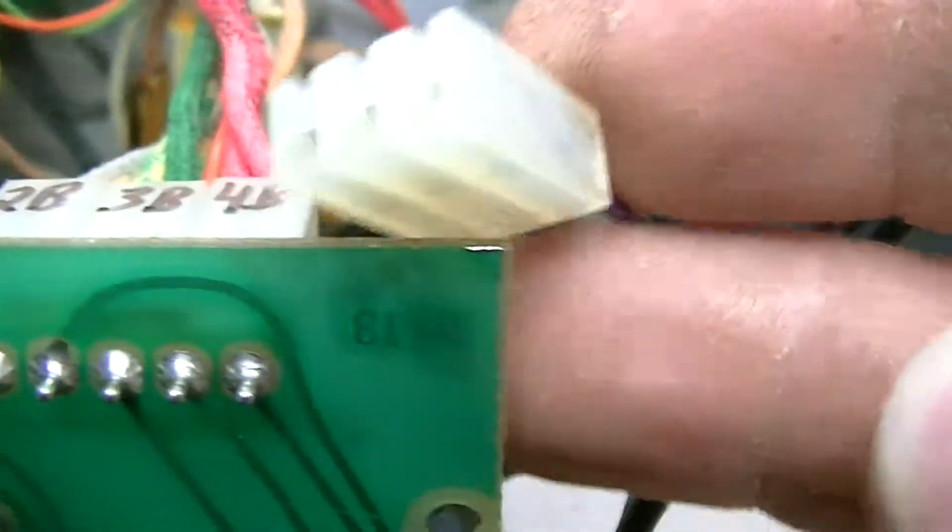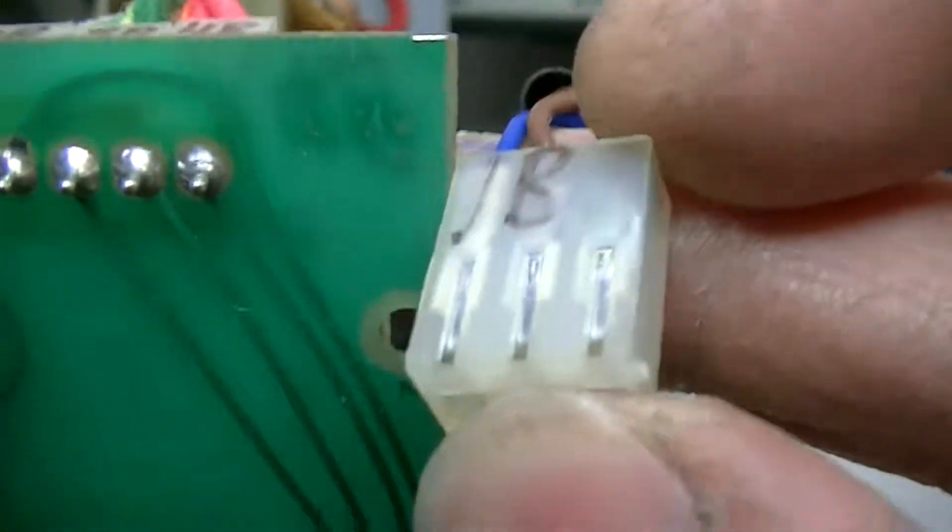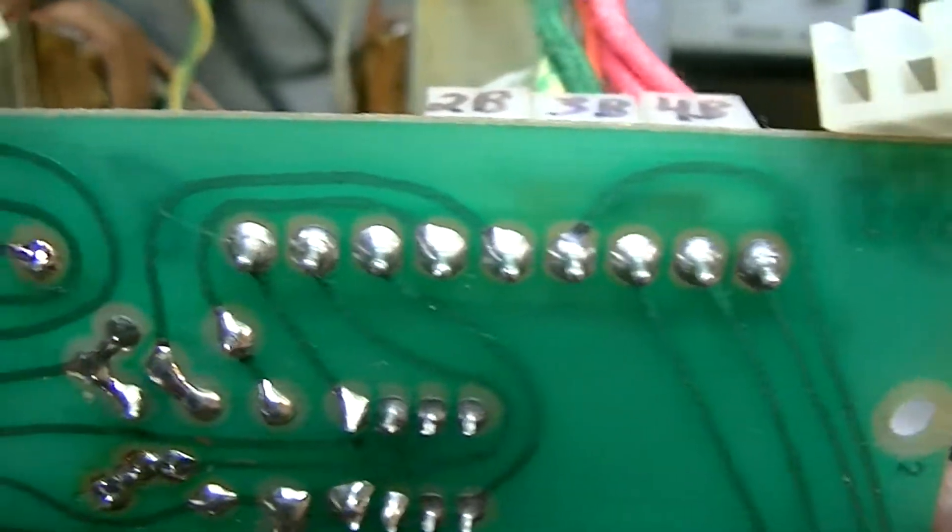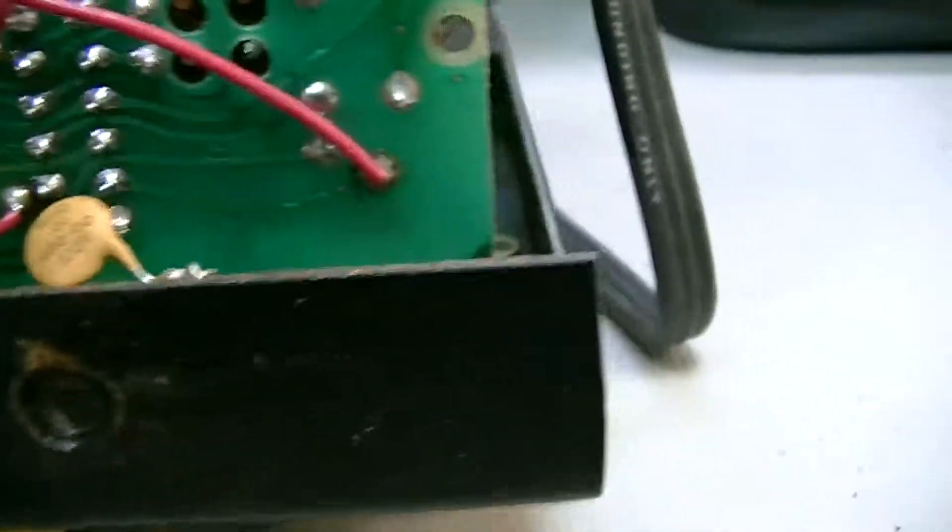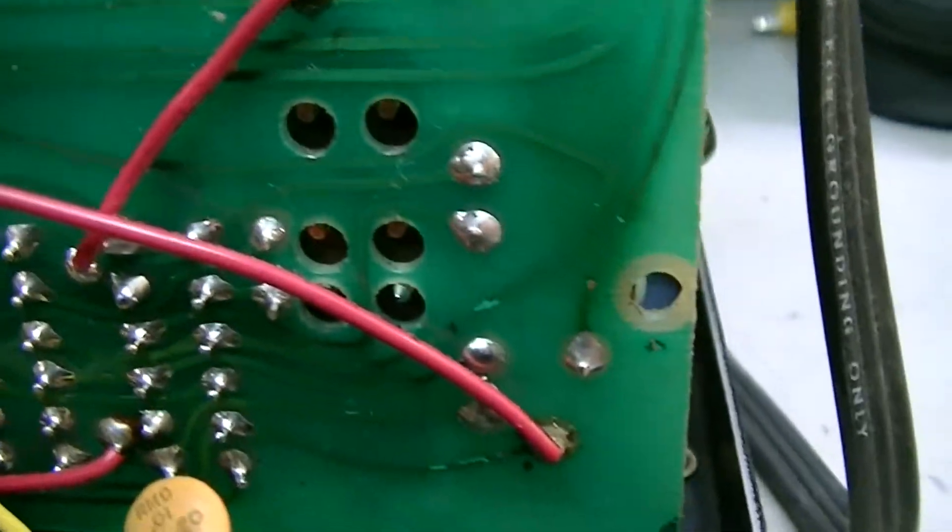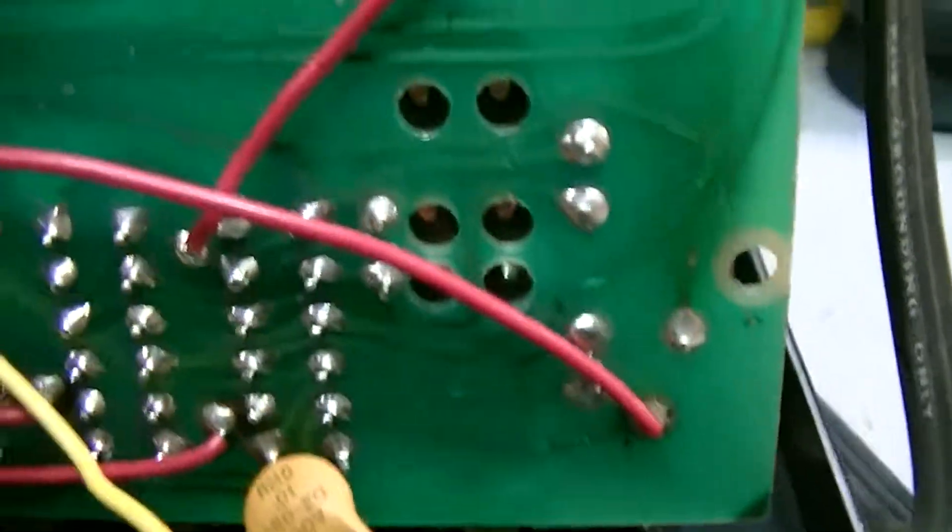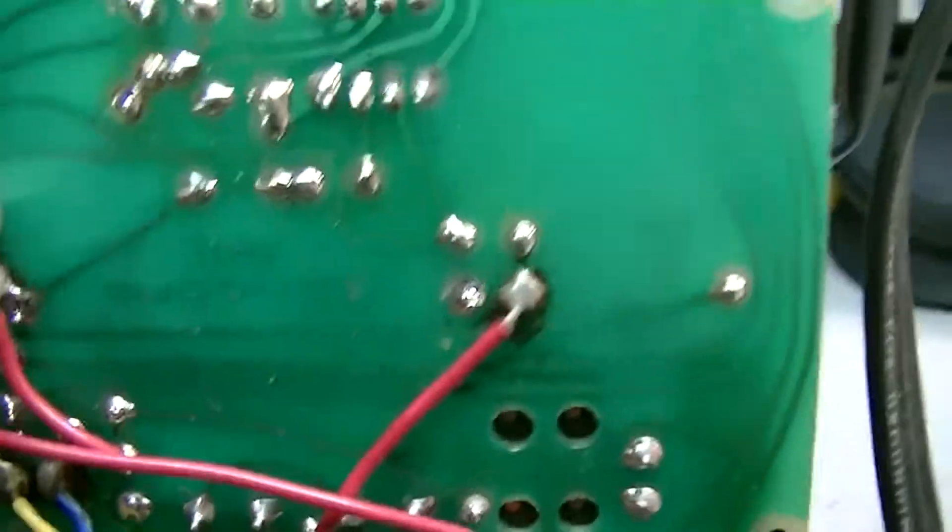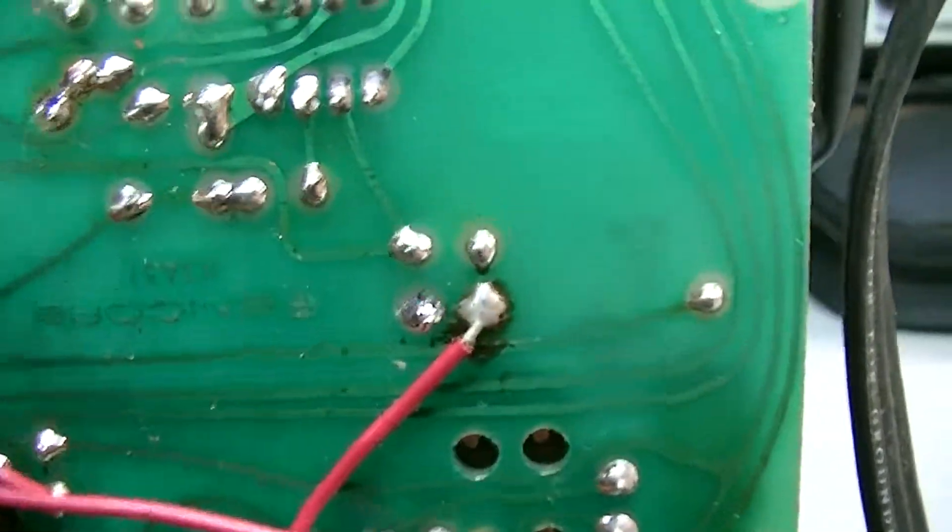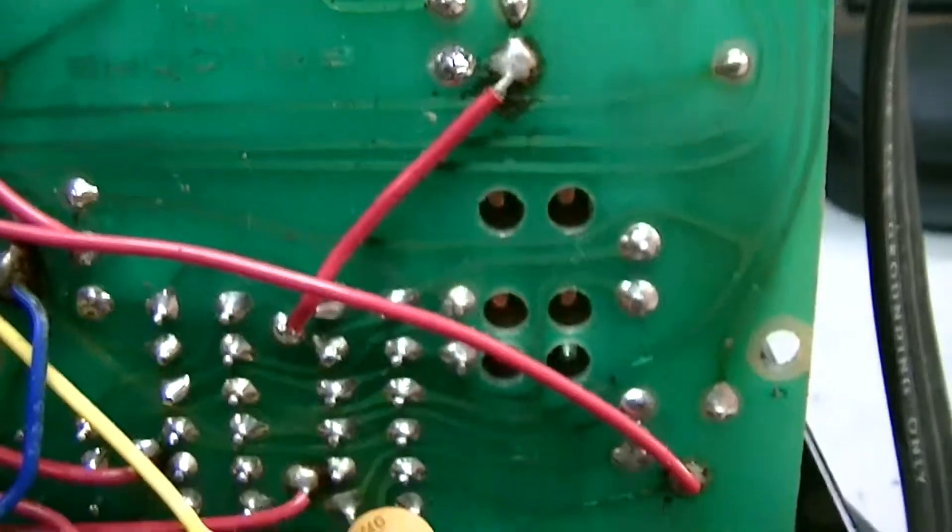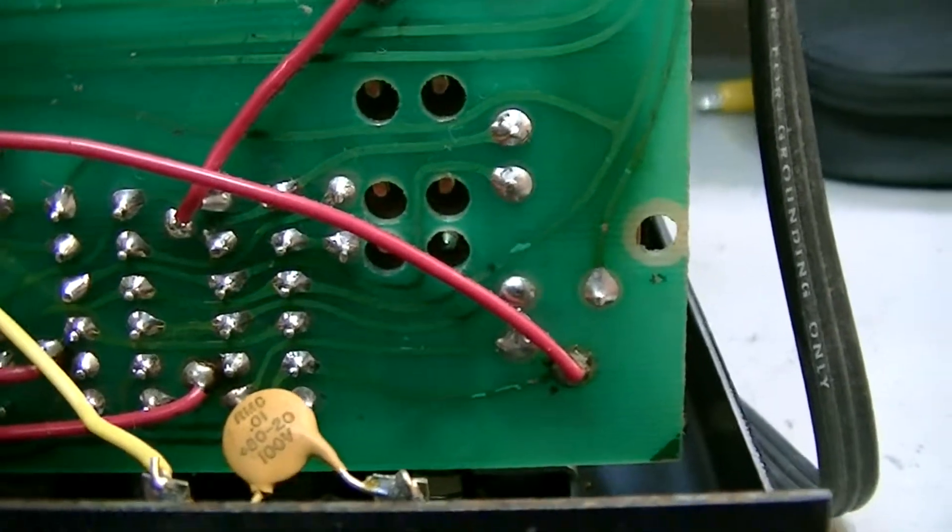I started looking down through here and man, the soldering is horrible on this thing. I'm really kind of disappointed, this being a Sencore. They're supposed to be some of the top-line stuff, but I don't know, 1973, maybe this is what you got.